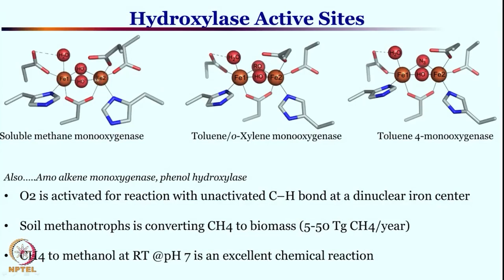Methane monooxygenase has a di-iron center. As you can see, two iron centers are bridged by two hydroxy moieties. They are also linked by a carboxylate group. Each of the iron centers has a histidine unit, as you see on iron 1 and iron 2. In addition, there are also carboxylate linkages. Clearly, these two iron sites are unsymmetrical.